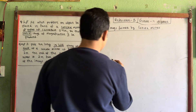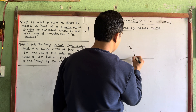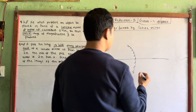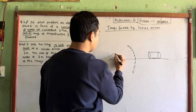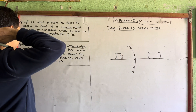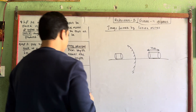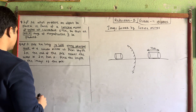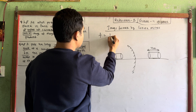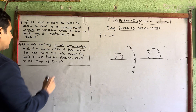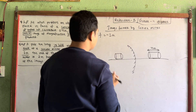Now for a second numerical: we have a convex mirror with a pole. The pole is 4 meters long. The convex mirror has a focal length of minus 1 meter — since it is a convex mirror, the focal length is negative, so f = minus 1 m. This is the numerical we need to solve.